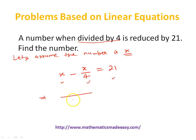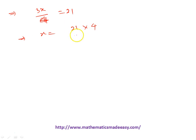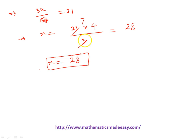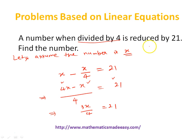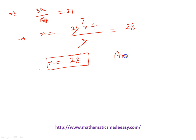Let's take LCM as 4. So (4x minus x) over 4 equals 21, which gives 3x over 4 equals 21. Multiplying both sides: 3x equals 84, so x equals 28. We assumed the number is x, and the answer we find is x equals 28. So 28 is the number.